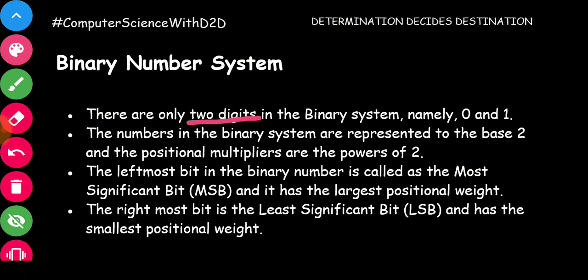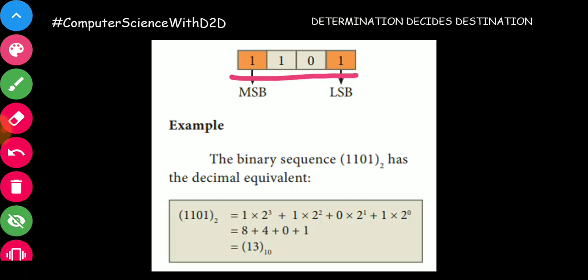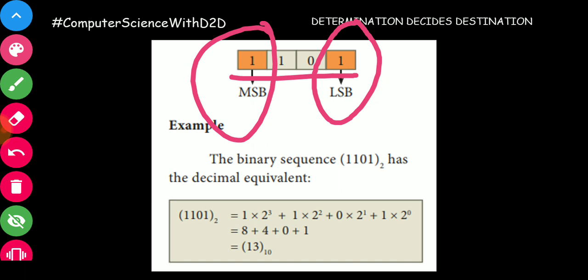This is the binary number system. In the binary number system, it uses 0 and 1. This binary number system is generally used in computers. We represent it as base 2. There are two important terms: most significant bit and least significant bit. The leftmost bit is the most significant bit; the rightmost bit is the least significant bit. For example, take 1001 1 — the rightmost bit is the least significant bit, and the leftmost bit is the most significant bit.